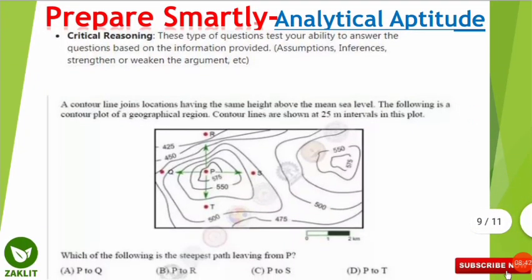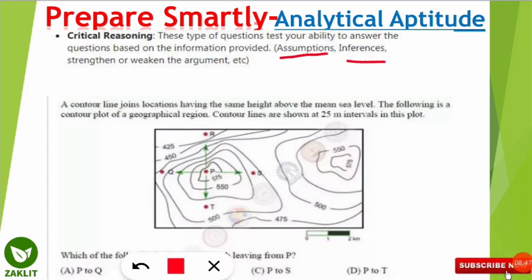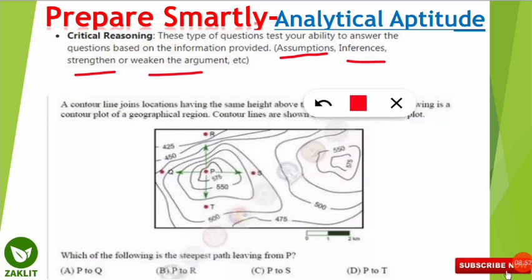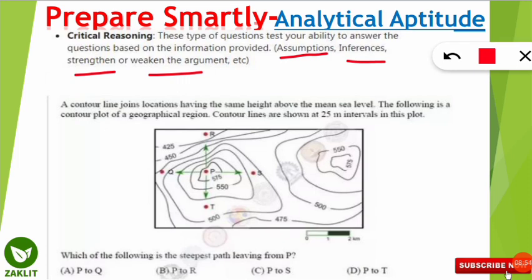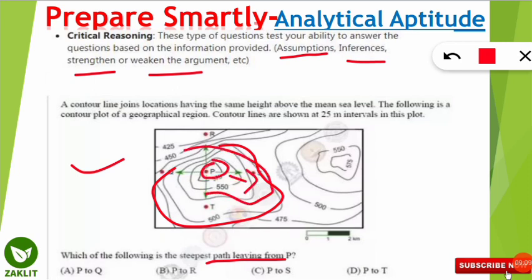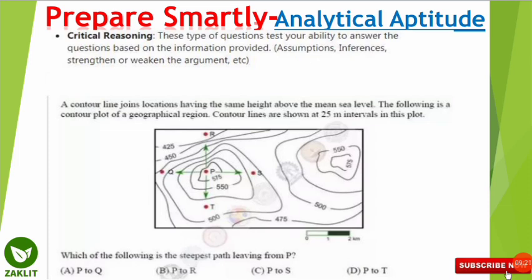Analytical aptitude questions test skills like identifying assumptions, drawing inferences, and strengthening or weakening arguments. For example, a sample question gives a figure with contour lines and asks which is the steepest path leaving from point P. Contour lines represent heights from mean sea level, and you must analyze them to find the correct answer. This kind of critical reasoning question is common in this section.